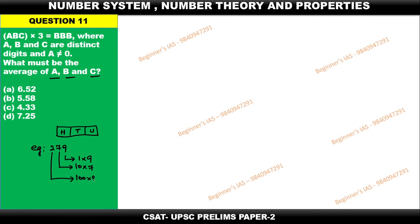This 2 can be written as 100 × 2, which is 200. So this can be written as 200 + 70 + 9. This is the way to express place values. Let us move on to this question.